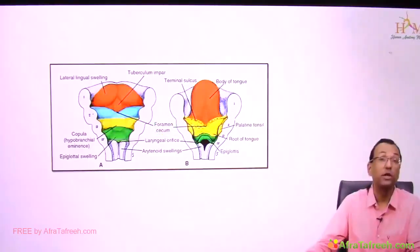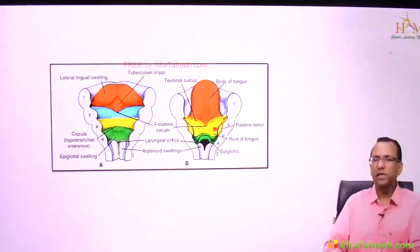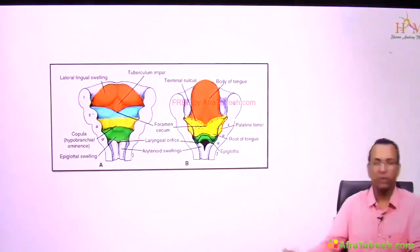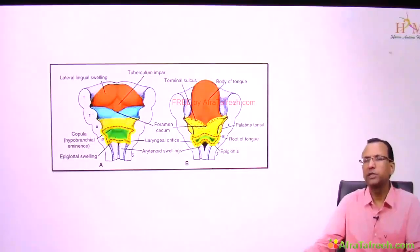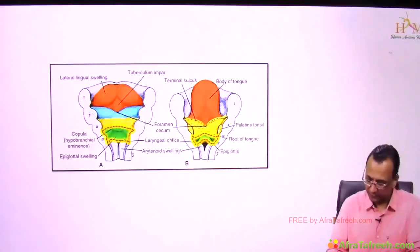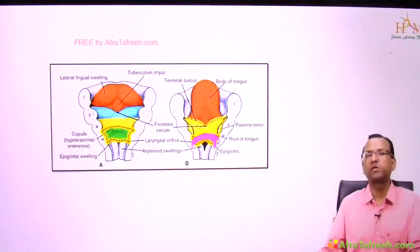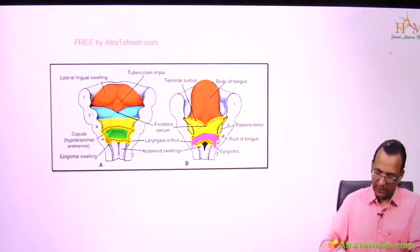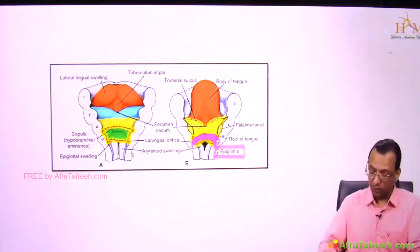It is the third arch, shown in yellow, that is contributing to the posterior one-third of the tongue. The posterior one-third of the tongue comes from the third arch. The fourth arch will form the epiglottis, and not only the epiglottis, but also the posterior most tongue. So the fourth pharyngeal arch forms both the epiglottis and the posterior most tongue.